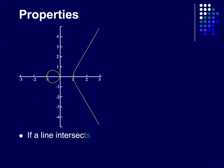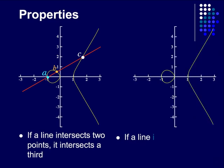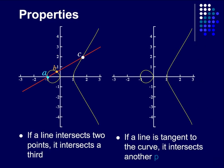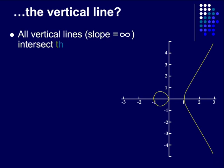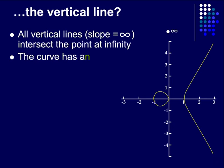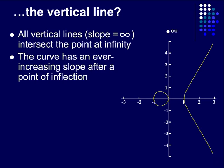Some properties of these curves are that if a line intersects two points, it intersects a third, and that if a line is tangent to the curve, it intersects another point. But, what about the vertical line? We can say that all vertical lines with a slope of infinity intersect a point at infinity, and that the curve has an ever increasing slope after a point of inflection.